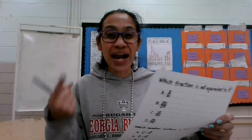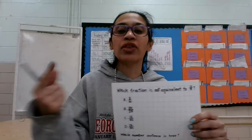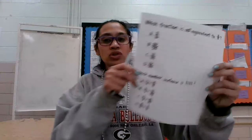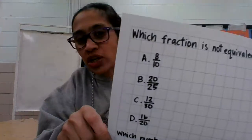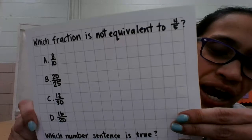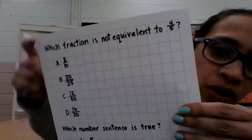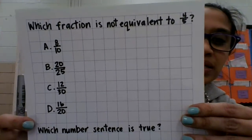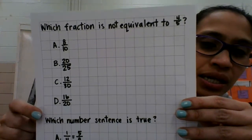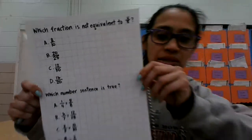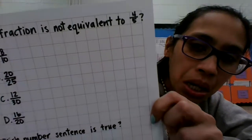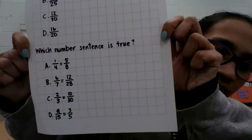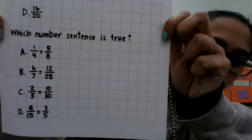I'm going to give you two questions. Hold it up, write it down in your notebook, then work it out, and I'll help you with it as well. The first question: which fraction is NOT equivalent to four-fifths? A: eight-tenths, B: twenty twenty-fifths, C: twelve-thirtieths, D: sixteen-twentieths. Write that down.